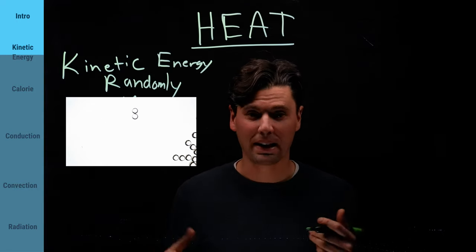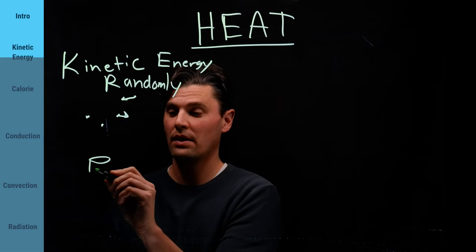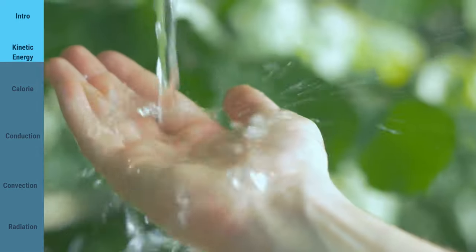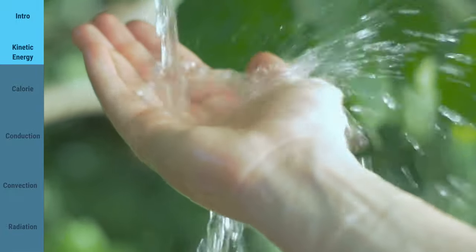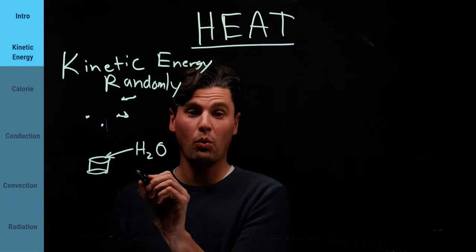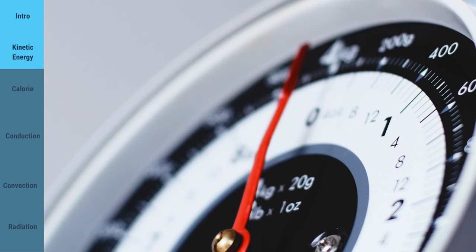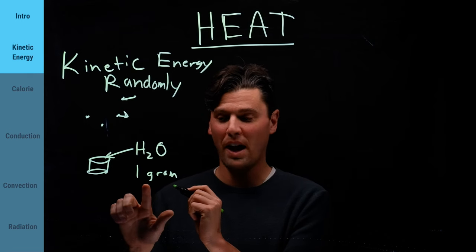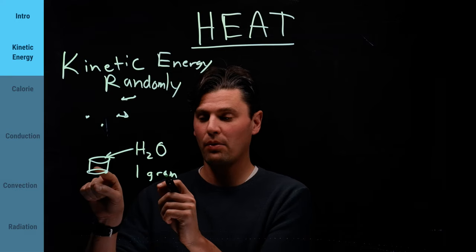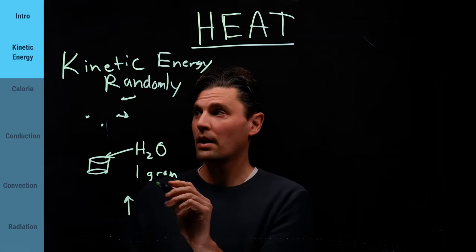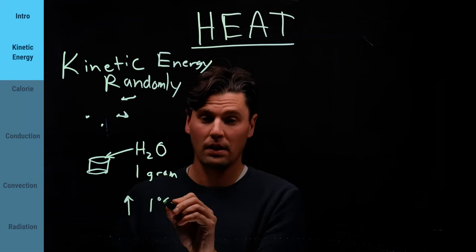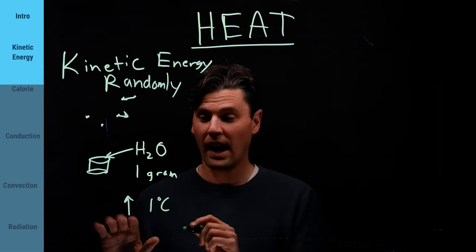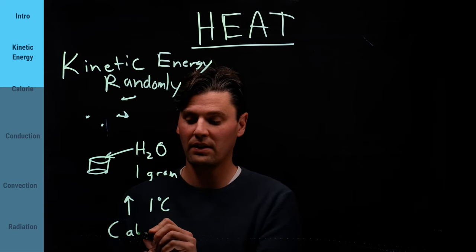And how do we quantify heat? We quantify it as, think about one, usually we use water as our reference. So this is water, H2O. And it is one gram of water. Just as a side, that's going to be a cubic centimeter is going to be the same as one gram of water. And if we take that gram of water and then we heat it up by one degree Celsius. So we take water, we heat it up by one degree Celsius. And that one gram of water heated by one degree Celsius, that is called a calorie.